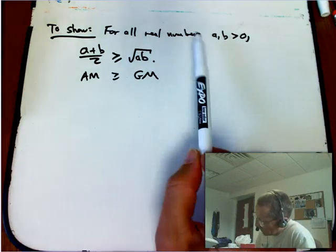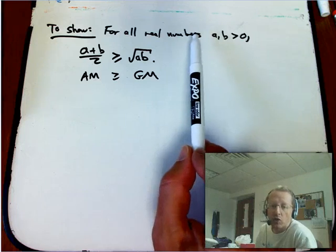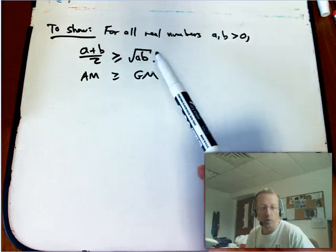We want to show that for all real numbers a, b greater than zero, that (a+b)/2 is greater than or equal to the square root of ab.